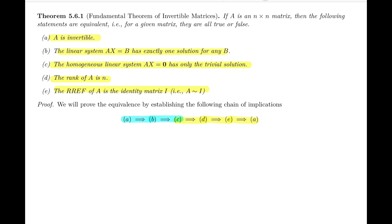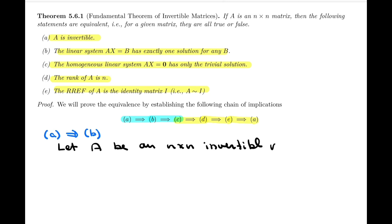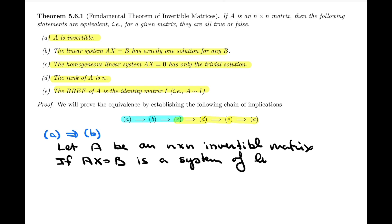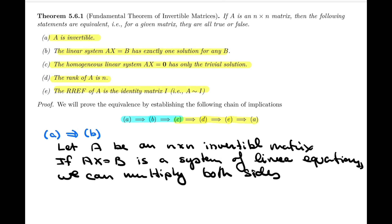Let's start the proof with the first implication: a implies b. We know this to be true but need to write it more formally. Let a be an n by n invertible matrix — that's the premise. If ax equals b is a system of linear equations, then we can solve that system by multiplying both sides by a inverse, because a is invertible so a inverse exists.